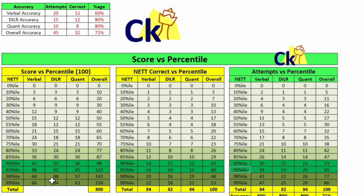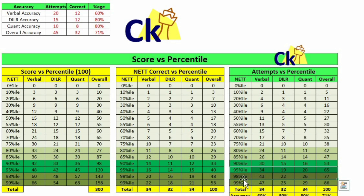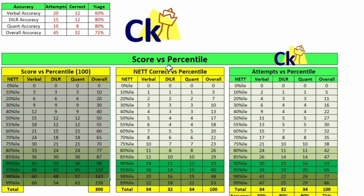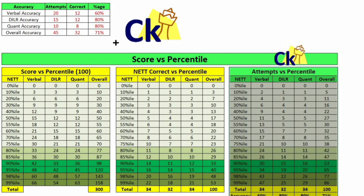So this is a beautiful calculator. You don't need to touch any other figure. All the data is fixed. You just need to change these numbers and you will see the difference in your attempt. Based on your target, you have to find out how much attempt you need. The moment it is more than 34, this means that target is impossible for you to achieve. This is score versus percentile, this is net correct versus percentile, and this is net attempt versus percentile. This calculator is going to help you find out your accuracy.